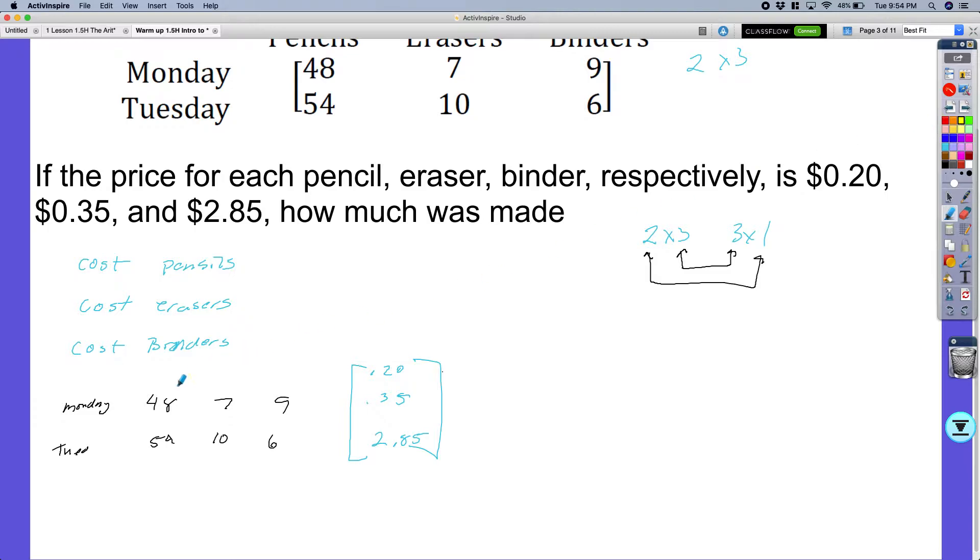And the first thing that I'm going to do, if you guys remember, I'm going to take my first row and multiply it by my one and only column. So this would be then on Monday's total, I'm going to have 48 times 0.2 plus 7 times 0.35. Now I'm going to have plus 9 times $2.85. And when I multiply and add all those up, that will be the total cost for Monday.